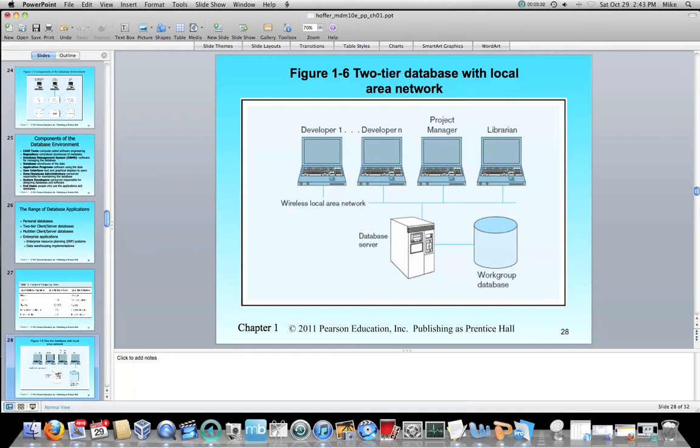So a two-tier works like this. A two-tier are the end users and their computers using maybe a wireless or a LAN to access the database server, which in turn accesses the database. In the database itself, those files may be in the database server, maybe not. But this is basically the two-tier, where you have end users using some kind of network technology to get to a centralized database server.